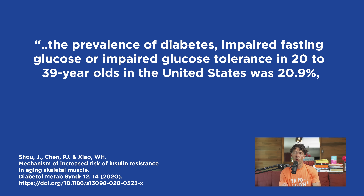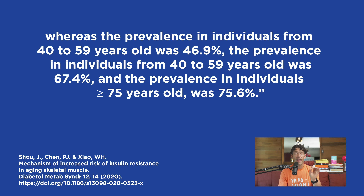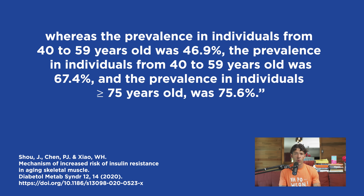I want to share with you some prevalence and statistics with regards to the age-associated changes in insulin sensitivity. The prevalence of insulin resistance in individuals between the ages of 20 and 39 is only 20%. But this number steeply increases up to 60% in individuals between the ages of 40 and 59. That number continues to get worse for individuals over the age of 75, where the prevalence is north of 75%. So that means only one in four individuals over the age of 75 have normal glucose tolerance.